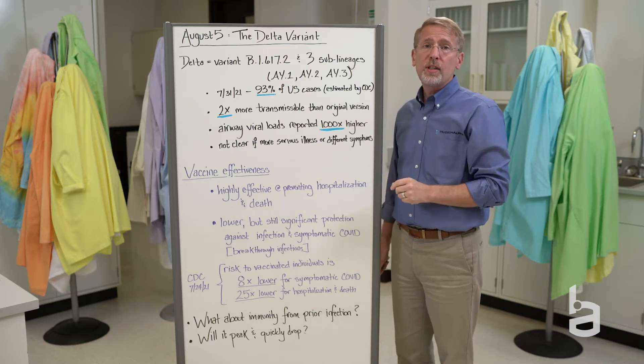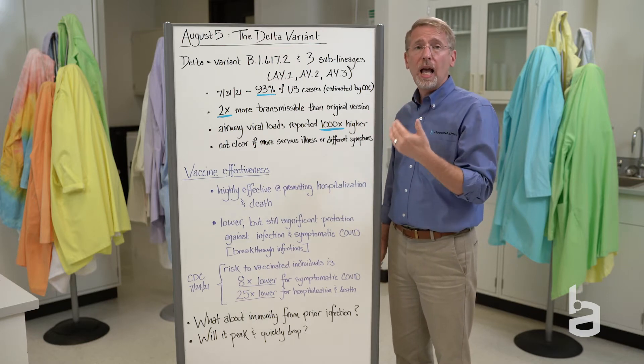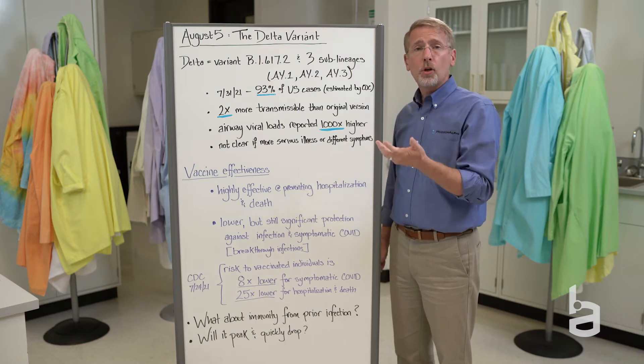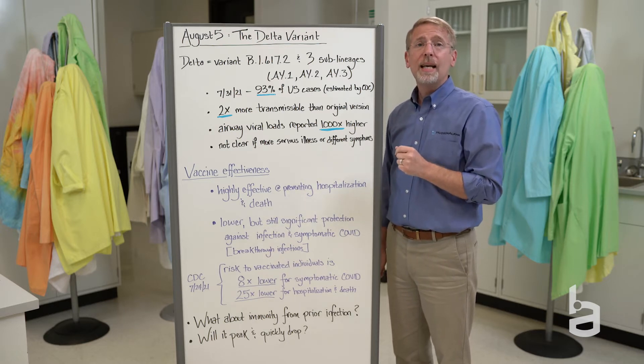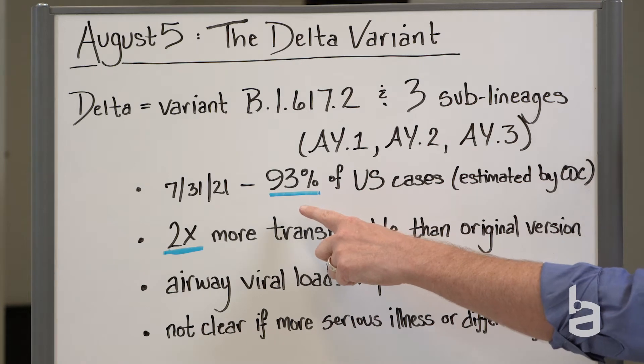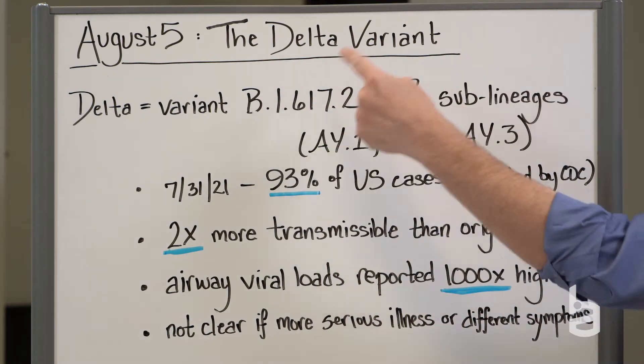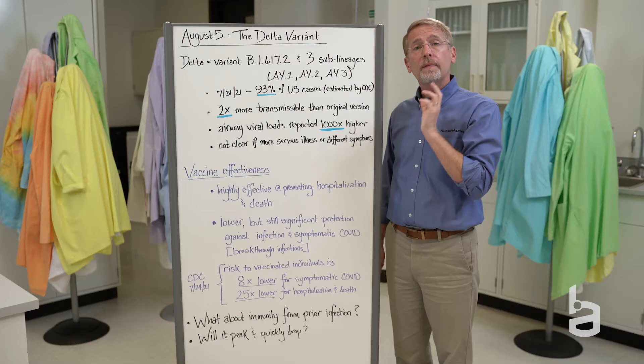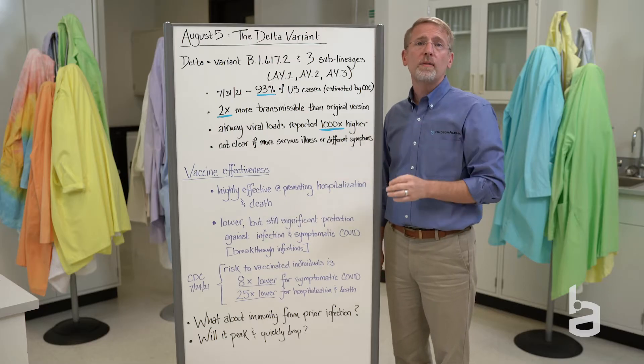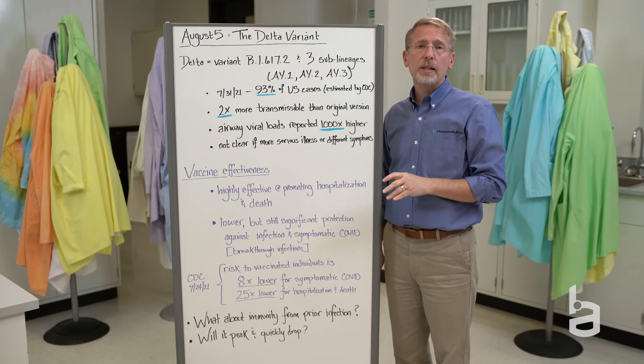The Centers for Disease Control at the end of July, their estimate of the percentage of SARS-CoV-2 infections in America suggests that 93% of all US cases are caused by this Delta variant and its sub-lineages. This is the dominant version of the virus that is present here in the United States.